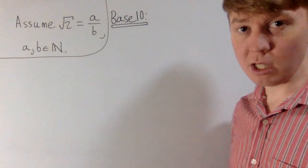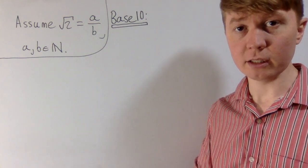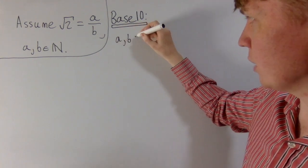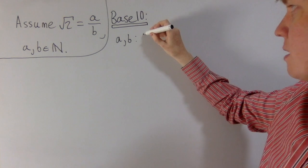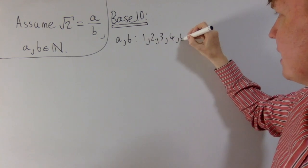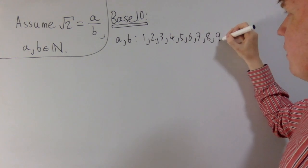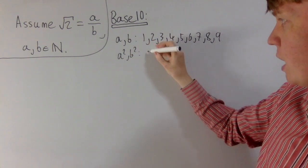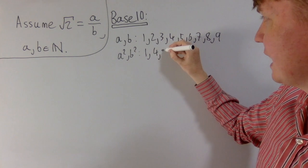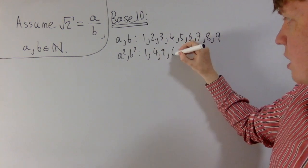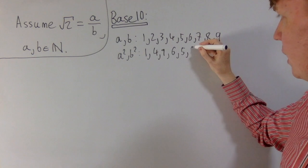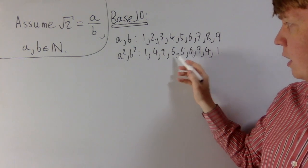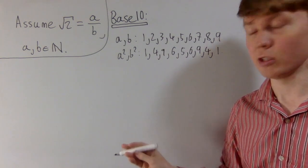This sort of argument can actually be used in different bases as well. It's particularly elegant in base 3, but let's look at how it works in base 10. The last non-zero digit of an integer a or b in base 10 can be 1, 2, 3, 4, 5, 6, 7, 8, or 9. The last non-zero digit of these squared gives us: 1, 4, 9, 6 (from 4²=16), 5, 9, 4, 1 — so all possibilities are 1, 4, 5, 6, or 9.